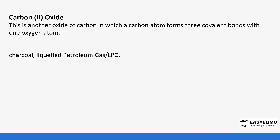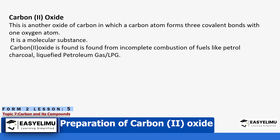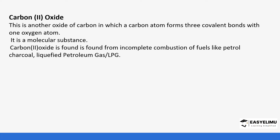Carbon monoxide (CO) is another oxide of carbon — remember previously we talked about carbon dioxide (CO₂) and how it is prepared. CO is another oxide of carbon and it usually has three covalent bonds, and these covalent bonds are bonded to an oxygen atom. It's molecular in nature, a molecular substance, and it's gaseous in nature. It's found when you completely burn fossil fuels like charcoal.